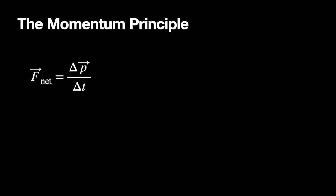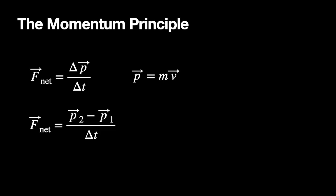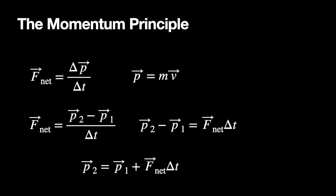Let's start with the momentum principle. This says that the net force on an object is equal to the change in momentum divided by the change in time, where momentum is mass times velocity. If I consider a time interval delta t, with p1 at the beginning and p2 at the end, then the change in momentum is p2 minus p1 — and those are all vectors. If I multiply both sides by delta t, I get p2 minus p1 equals F_net times delta t, then add p1 to both sides.